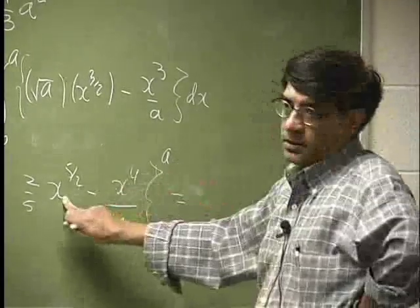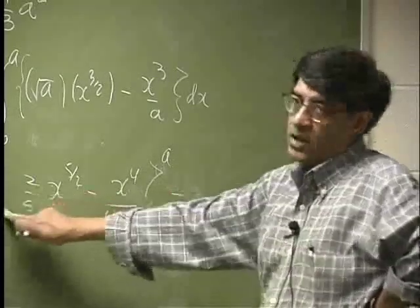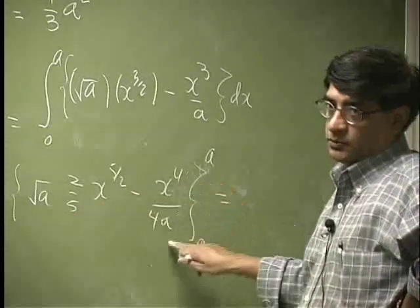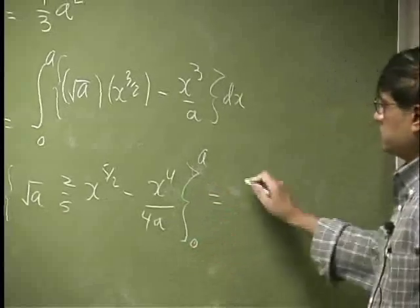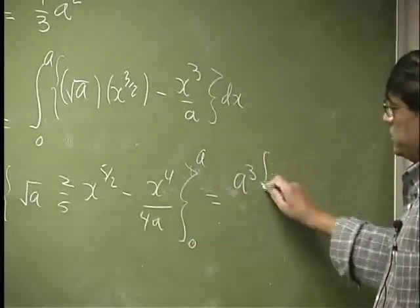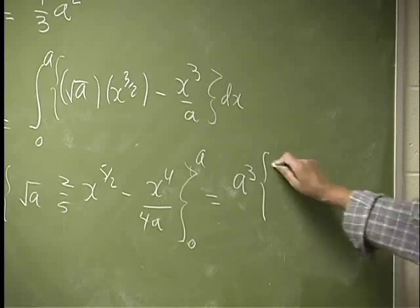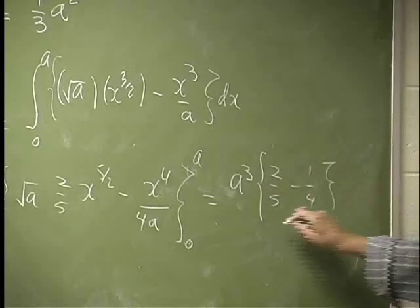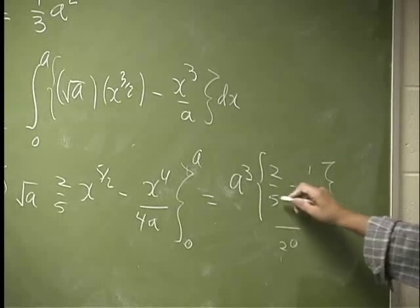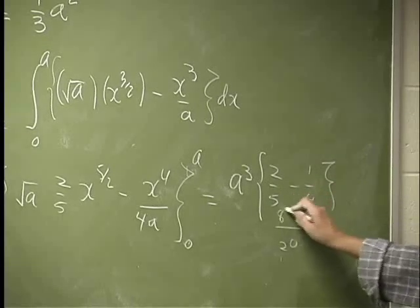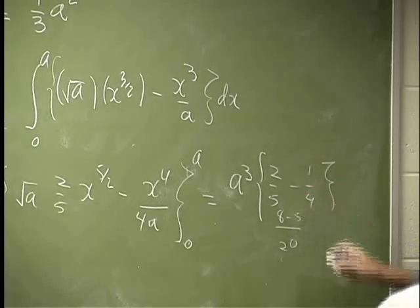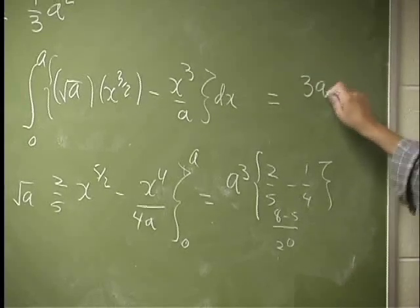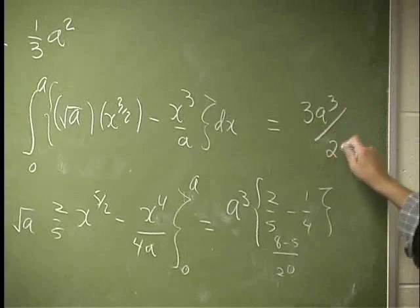So that's a, that's a five over 2 and a half, that's a cube. Same thing here, you have a fourth over a, so a cube comes out. Then you have two-fifths minus one-fourth. So let's say 20 plus 8 plus 5, or this whole thing should be 3 a cube over 20.